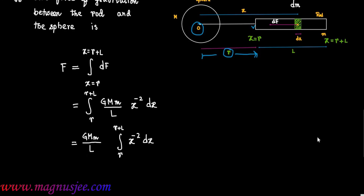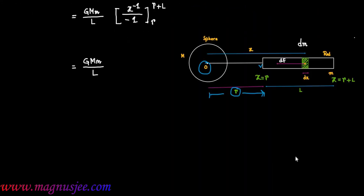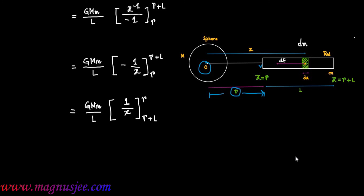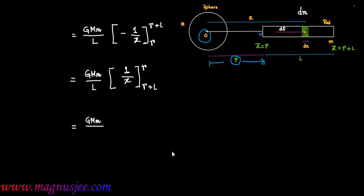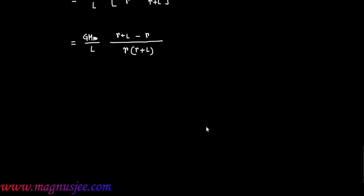So F equals G·M·m divided by L, times the integral from r to r plus L of x to the power minus 2 dx. Evaluating, this gives G·M·m divided by L, times the bracket x to the power minus 1 divided by minus 1, evaluated from r to r plus L. This equals G·M·m divided by L, times (1/r minus 1/(r plus L)). Taking the LCM r(r plus L), the numerator becomes r plus L minus r, leaving just L in the numerator.